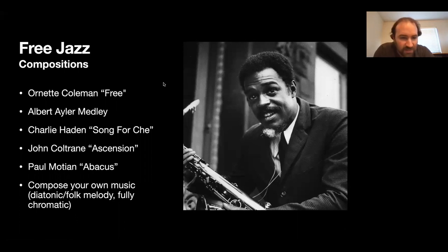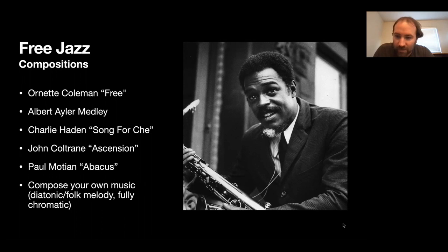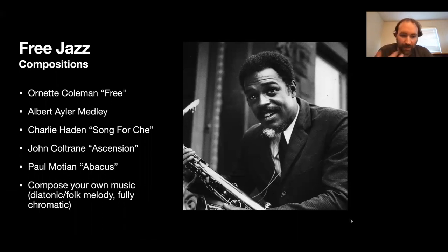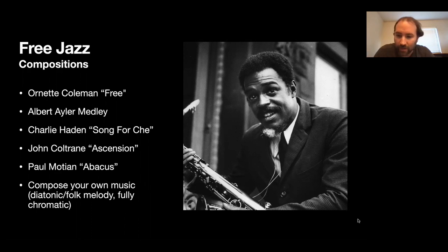When we get to ideas of free jazz compositions, one of the most important things — along with studying and transcribing this music — is also just composing your own music. Try some stuff with diatonic folk-style singable melodies, but also try some stuff that's fully 12-tone chromatic and everything in the middle. Dave Douglas talked about trying to figure out how to play 12-tone music on his trumpet, and the response was just write some tunes, write some melodies that do that — the more you do that, the more it will come second nature to improvising like that.